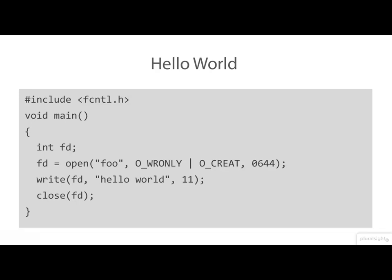I'm going to dive straight in and show you some code. Here we have a Hello World program that writes its greeting to a file rather than to a screen. There are three system calls here: open, write, and close. We'll be discussing all the file IO system calls in detail in the next module, but for now what I want you to notice is that the main function is always the entry point for a C program.